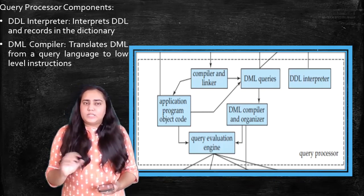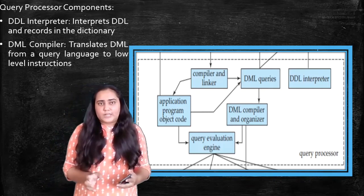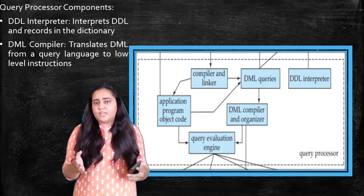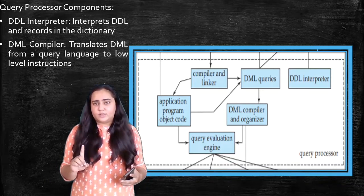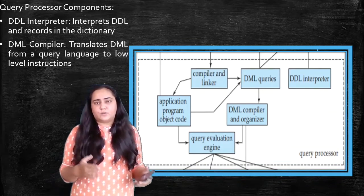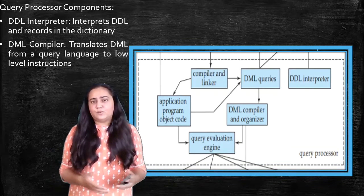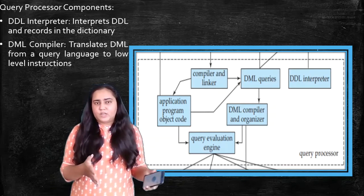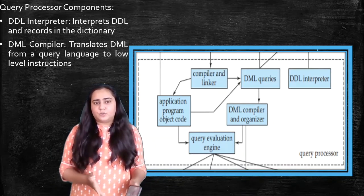So DDL, that is the Data Definition Language, which is small, and because you only create your database once, that is why the interpreter is used in order to translate it. Because you're not going to keep on creating the database. Once it is created, it's ready for you to use.